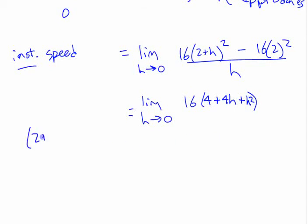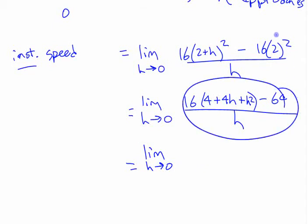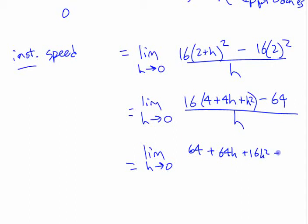What do I get when I expand that? 4 plus 4h plus h squared. Does it make more sense if I put 2 plus h times 2 plus h? Okay. Minus 64, right? The whole thing over h. I haven't changed this. I've just simplified it algebraically or changed it around a bit algebraically. If I actually multiply that out on the top, I get 64 plus 64h plus 16h squared minus 64, the whole thing over h.